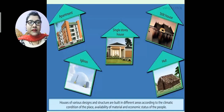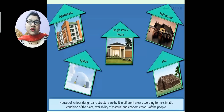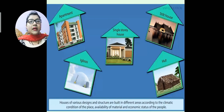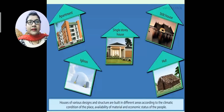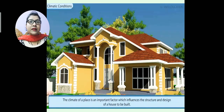Climatic condition means the weather or climate that prevails constantly in one particular region. This affects the structure of houses found in that region. Availability of materials refers to which materials are easily and nearby available in a particular region. Economic status refers to the budget of the people — what amount of money they can spend while building a house. Now let's start with the first factor: climatic condition.